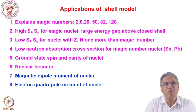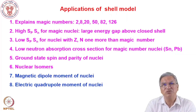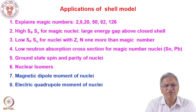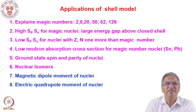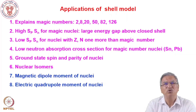Nucleons in the closed shell are tightly bound. To remove any individual nucleon from that tightly bound shell requires extra energy, which is why separation energies are higher. If you have a neutron or proton more than the magic number, it is easy to remove that particular nucleon. The neutron absorption cross section for nuclei with magic numbers of protons and neutrons is very low, again because of the large energy gap above the closed shell.